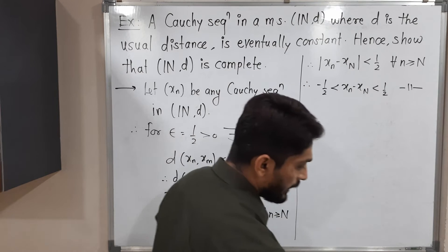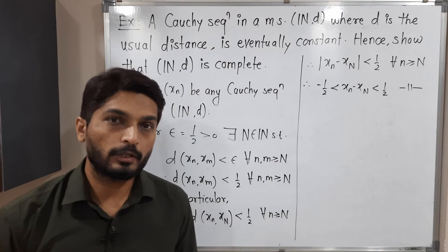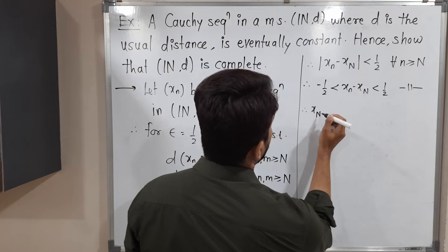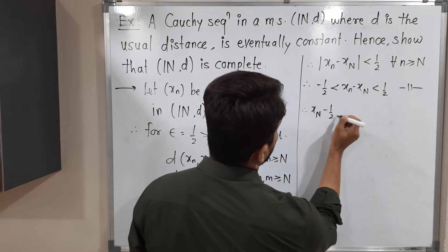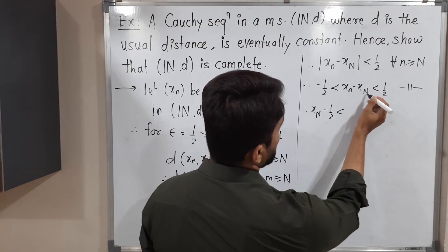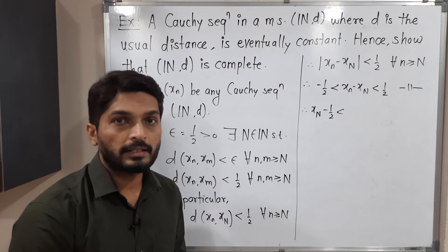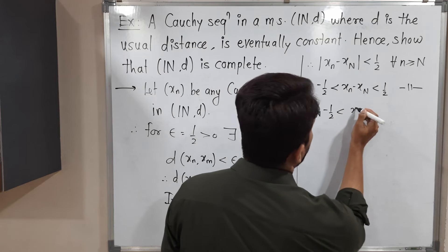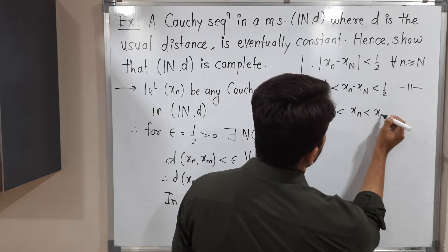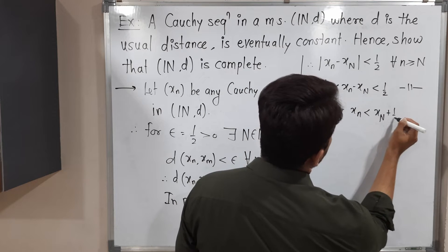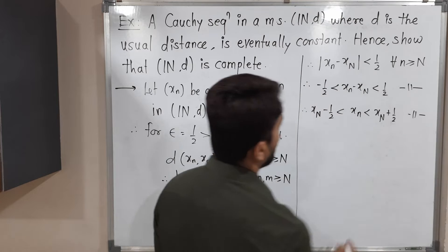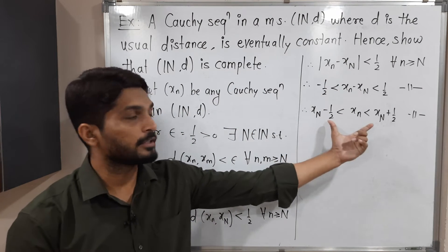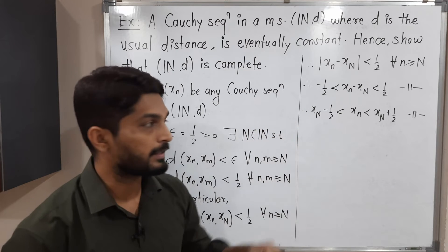Let us go further. Now I will add X capital N to all sides. So adding X capital N, I get: X capital N minus half less than Xn less than X capital N plus half, with the condition for all n greater than or equal to capital N. That means Xn lies between these two values. Let me draw the diagram. So X capital N is fixed here, X capital N plus half is here, and X capital N minus half is here. So Xn lies between these two.